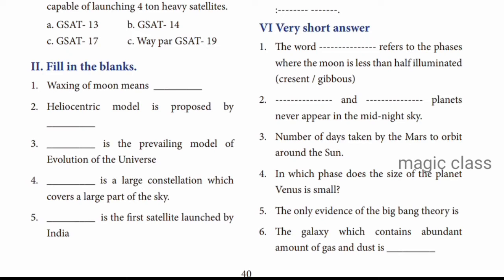Question number 4: Dash is a large constellation which covers a large part of the sky. The answer for the largest constellation is Ursa Major. Question number 5: Dash is the first satellite launched by India. The answer is Aryabhata.